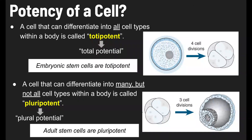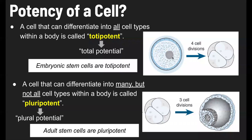Here we've got a zygote, and you can see it's going to divide and produce these stem cells. Those stem cells are going to divide, and after about 50 more divisions, they will have a specific structure and a specific function — there will be a specialized cell at that point. This leads to a categorization of the kinds of potential a cell has, which we call the potency of a cell. A cell that can differentiate into all cell types within a body is called totipotent — it has total potential. An example is an embryonic cell: when a sperm and egg cell form a zygote, up to about the first four divisions, it is considered totipotent and can become any cell type.